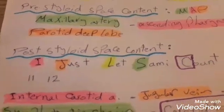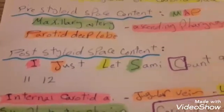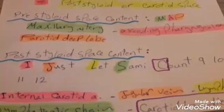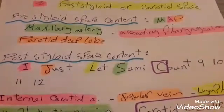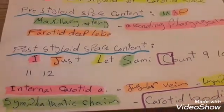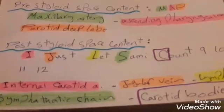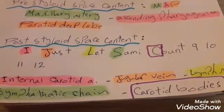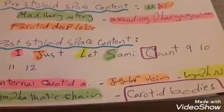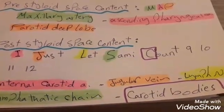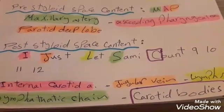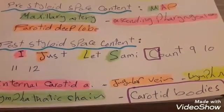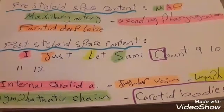The post-styloid space content — we can mnemonize it by 'I just let Sammy count 9, 10, 11, 12': the glossopharyngeal nerve, the vagus nerve, the accessory nerve, and the hypoglossal nerve.